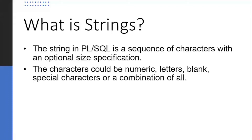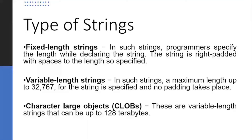There are three types of strings available in PL/SQL. The first is the fixed-length string — the programmer specifies the length while declaring, and the string is right-padded with spaces to that length. The second is the variable-length string, with a maximum length up to 32,767 characters and no padding. The third is the Character Large Object, or CLOB, which can be up to 128 terabytes.